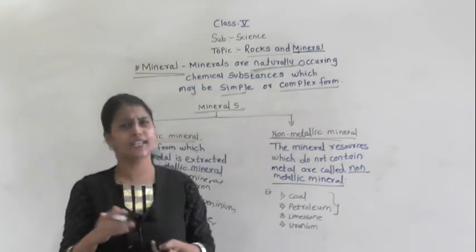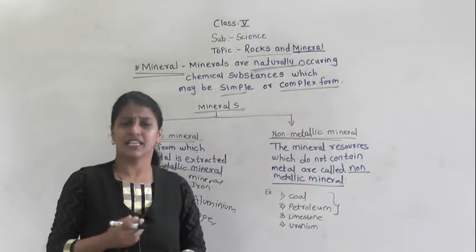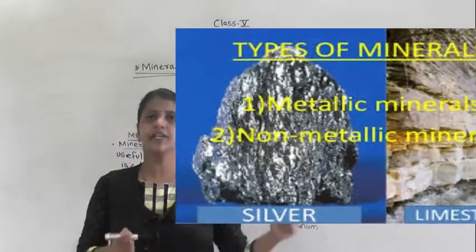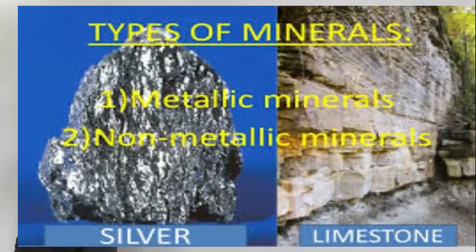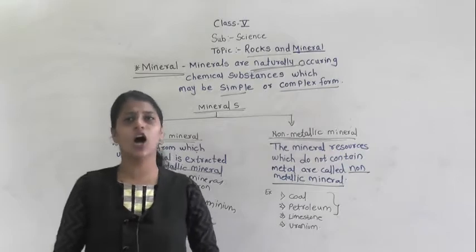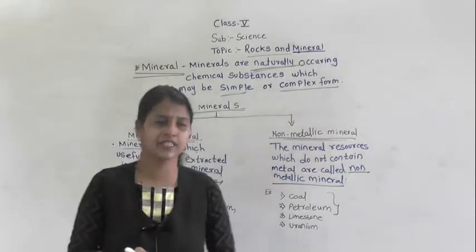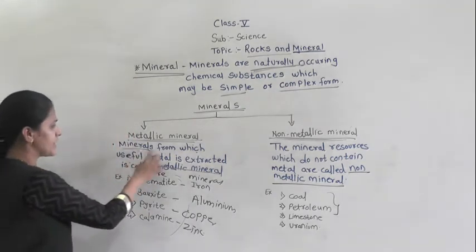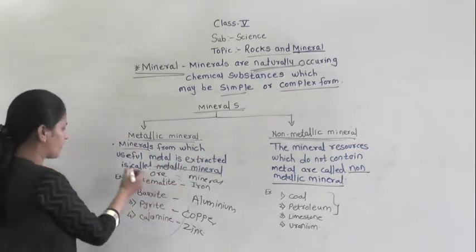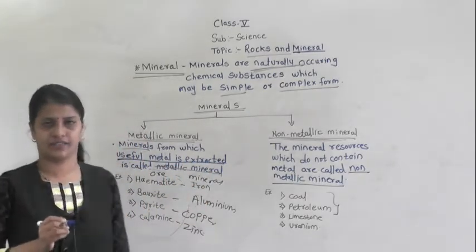Minerals may be simple or in a complex form. Now, minerals are classified into mainly two types: that is metallic minerals and non-metallic minerals. What are metallic minerals? Minerals from which useful metals are extracted are called metallic minerals.